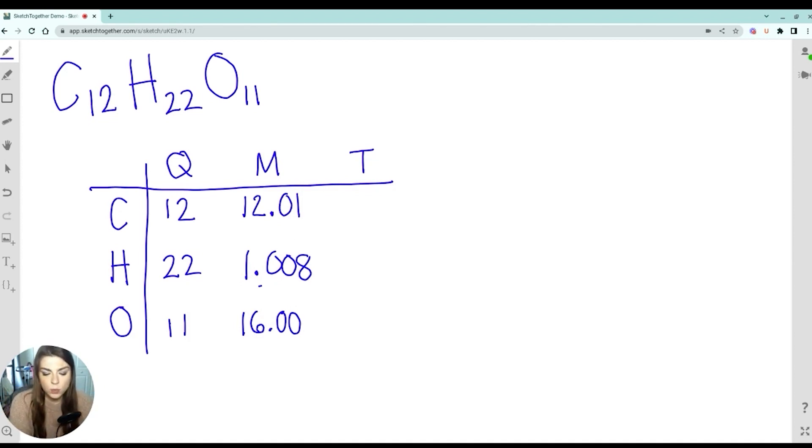And then to get the total, we multiply going across. So this comes out to 144.12. This is 22.176, and this is 176. And then we'll add all of these going down to determine, because each of these is like the total of the carbons, total of the hydrogens, we want the total of everything. So we're going to add all of these numbers together.